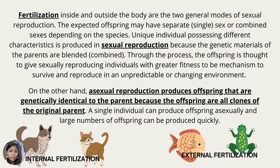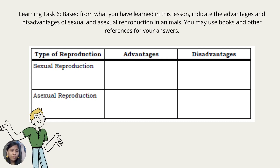Fertilization inside and outside the body are two general modes of sexual reproduction. Unique individuals with different characteristics are produced in sexual reproduction because the genetic material of the parents is combined. This gives sexually reproducing individuals greater fitness to survive and reproduce in an unpredictable or changing environment. Asexual reproduction produces offspring that are genetically identical to the parent — they are all clones. A single individual can produce offspring asexually, and a large number of offspring can be produced quickly. Learning Task 6: Indicate the advantages and disadvantages of sexual and asexual reproduction in animals using books and other references.